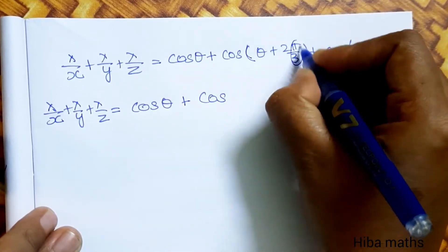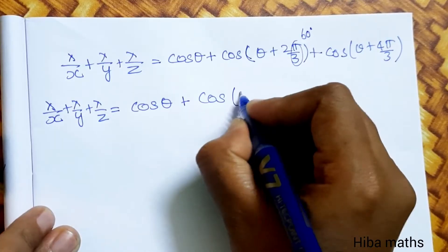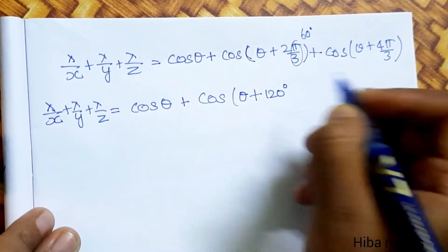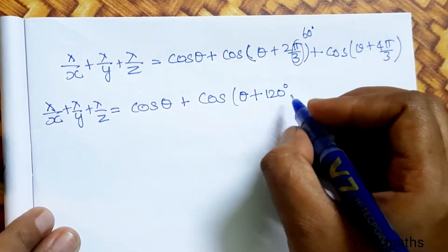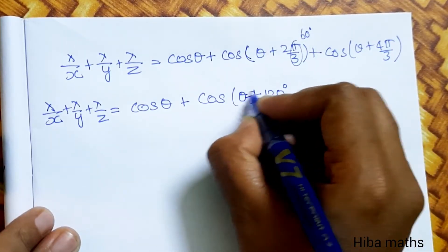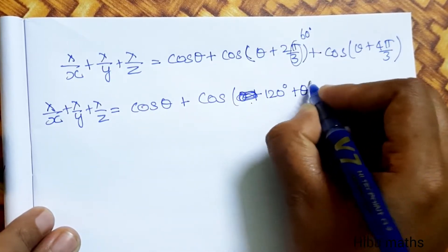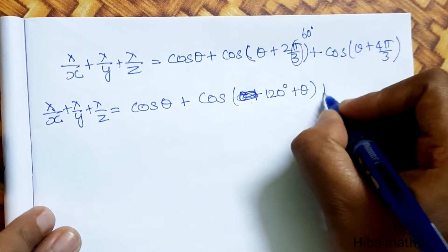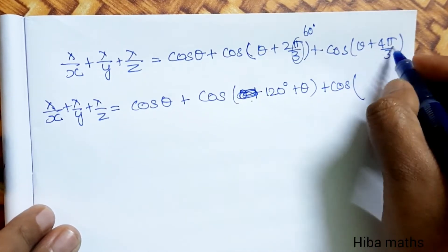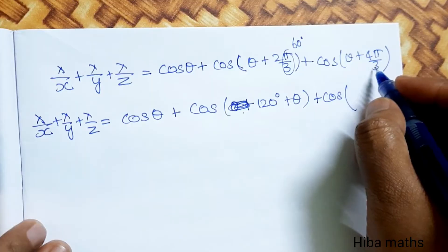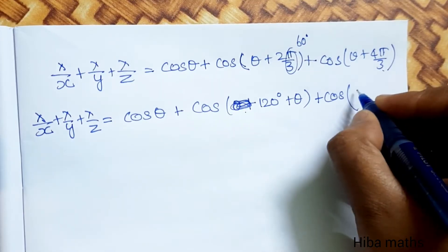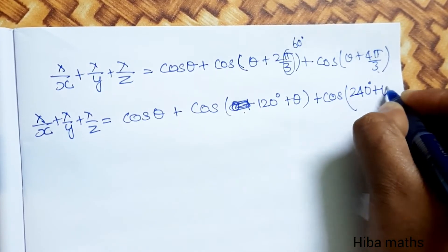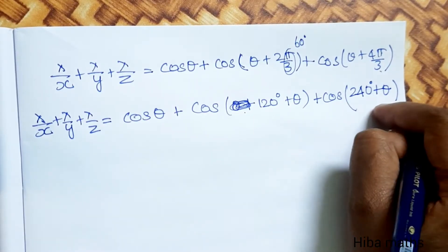Converting to degrees: 2π/3 = 120° and 4π/3 = 240°. So the left-hand side is cos θ + cos(θ + 120°) + cos(θ + 240°). We now apply the compound angle expansion to each term.